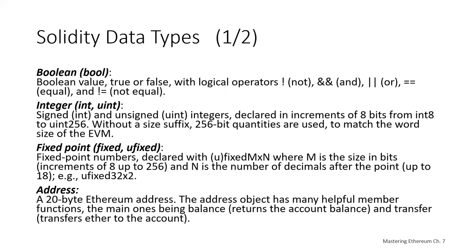You might ask why you would want to declare an eight-bit size versus a 256-bit size — why not just always use 256 bits like in Java? Well, remember that when we're dealing with Solidity, we're talking about writing smart contracts, and everything we do on the blockchain is going to have a cost in gas, which is a cost in ETH. One of the most expensive things from a gas perspective is storing information. So you can save a lot of money by using an eight-bit integer instead of a 256-bit integer if you only need eight bits — money is driving the programmer's choice.